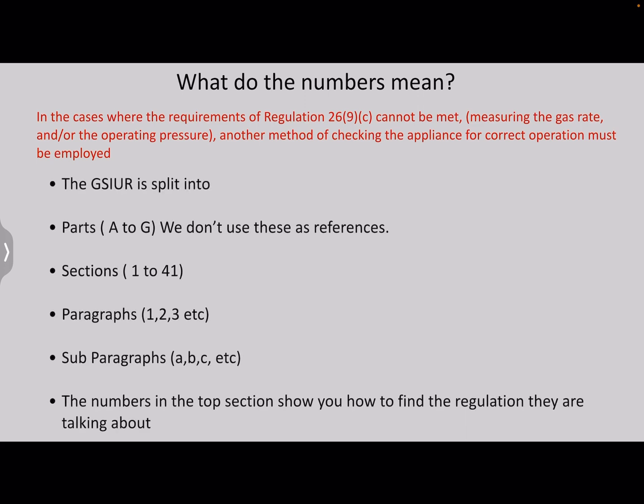Well, the regs themselves are split into parts, A to G. We don't use these in our references, but that just helps you when you're reading through trying to find the right place to start looking. You then have 41 sections, and that's the first number. One of those sections will be the first number. The sections themselves are split into paragraphs, and the paragraphs are given a number. And then those paragraphs themselves are split into subparagraphs, which are given a letter. So 26 is a section, nine is a paragraph, and C is a subparagraph.